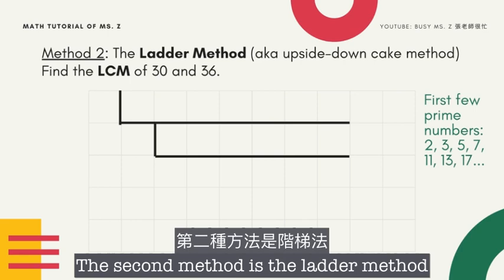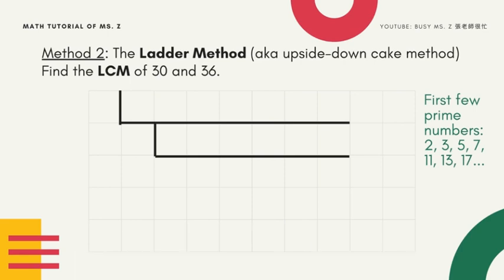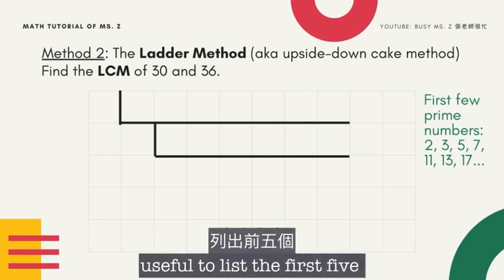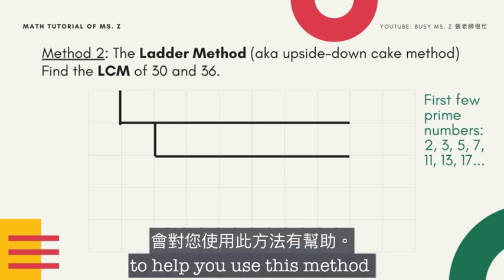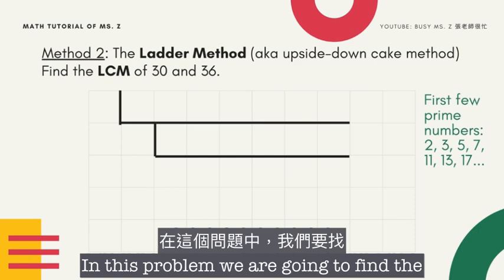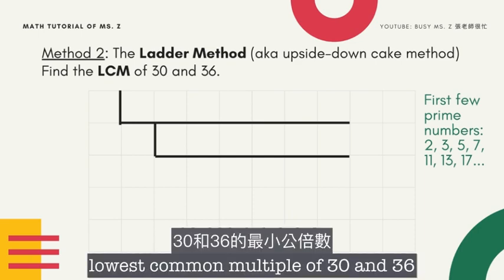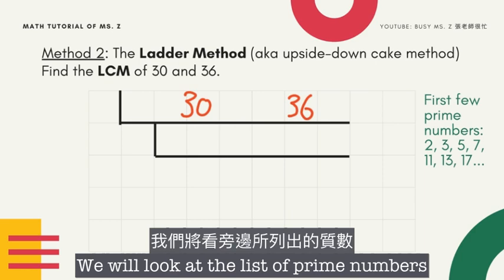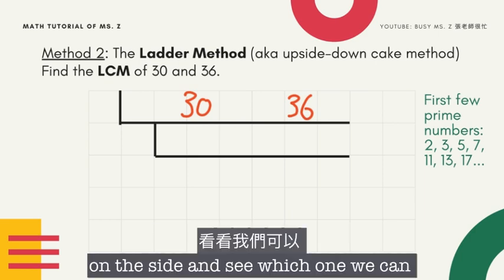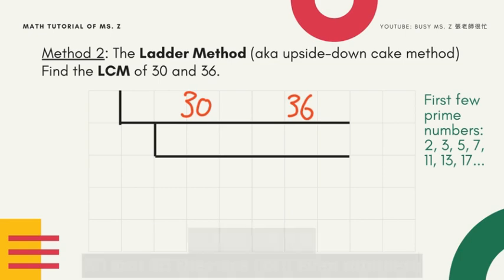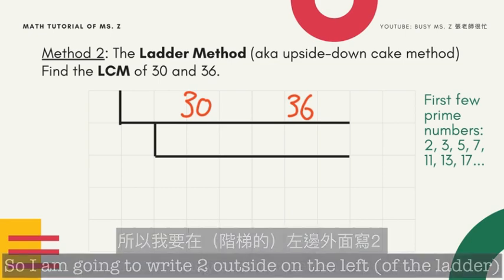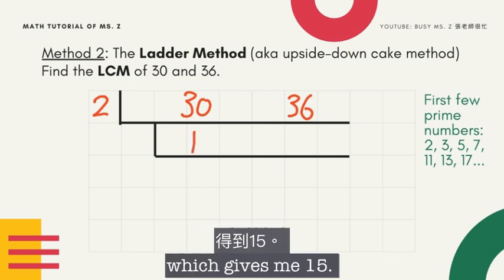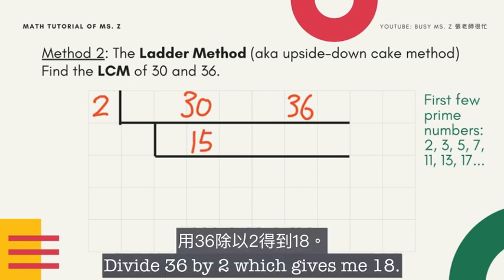The second method is the ladder method, or the upside-down cake method. In my previous GCF video, I talked about how it's useful to list the first five or six prime numbers on the side to help you use this method. In this problem, we're going to find the lowest common multiple of 30 and 36. We can pick 2 first because 30 and 36 are both even numbers, so I write 2 outside on the left. 30 divided by 2 gives me 15, and 36 divided by 2 gives me 18.